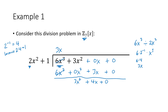Our working remainder has degree 2 and our divisor has degree 2, so we need to keep going. We take the leading term of the divisor and divide it into the leading term of the working remainder: 3x squared divided by 2x squared. The x squareds cancel, leaving 3 divided by 2, which means 3 times 2 inverse — that's 3 times 4, which is 12, the same as 5 in Z7.